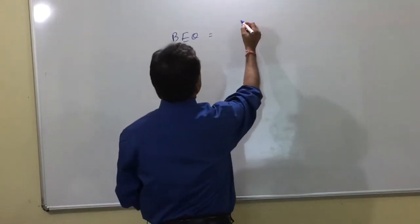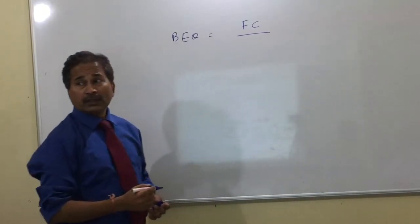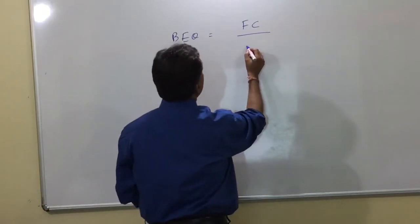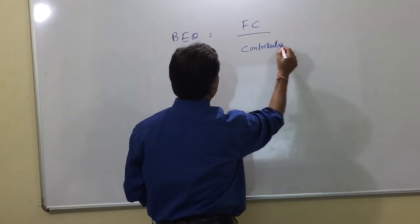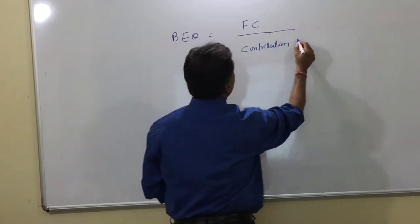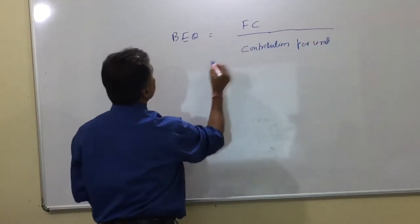So what I do is take the fixed cost divided by the contribution - fixed cost divided by contribution per unit, which is C.